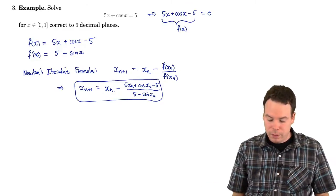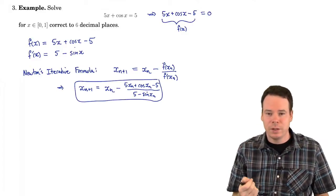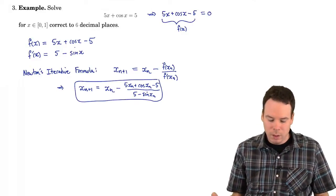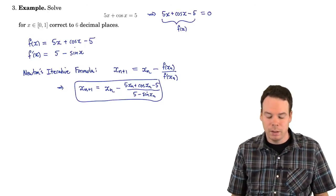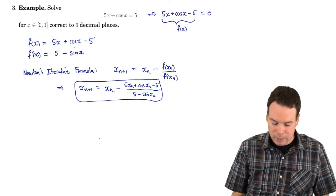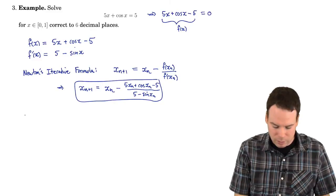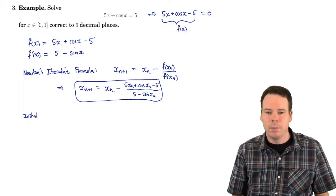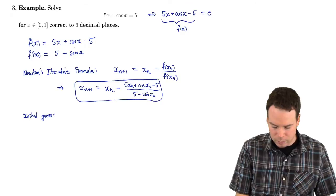We're all ready to go. The only thing we need now is a place to start — an initial guess. What is our x₁ that we're going to start to plug in? We're given a small interval, 0 to 1, so perhaps we could choose anything in this interval as an initial guess. What I'd like to do here is indicate, with this example, how you may go about trying to get a good initial guess for x₁.